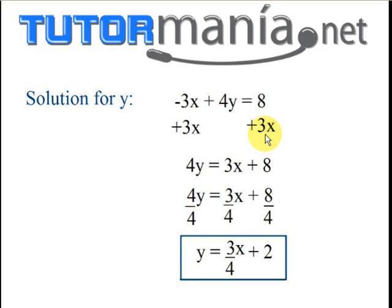The negative 3x and the 3x cancel out, and we're left with 4y equals 3x plus 8. We're not done yet because we only want y. So to get rid of the 4, we're going to divide by 4 because 4 divided by 4 is 1 and 1y is the same as y. We're going to divide 4y by 4, 3x by 4, and 8 by 4. After we do that, we're left with the equation y equals 3 fourths x plus 2.